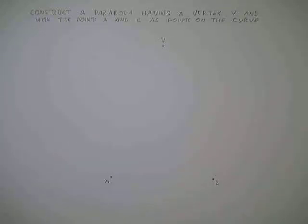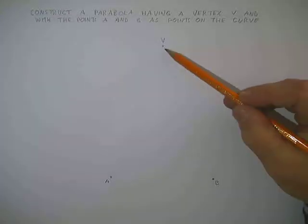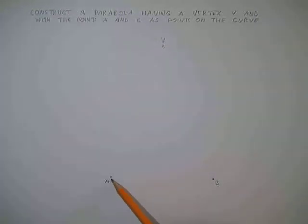Ok, so I am asked to construct a parabola having a vertex at v and with a and b as points on the curve.